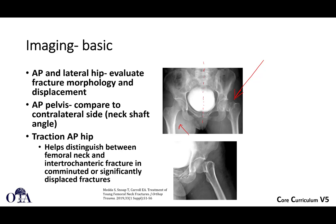Sometimes you have to get a traction AP hip x-ray if you have a confusing fracture pattern. For example, if the patient is severely externally rotated and it's hard to tell whether the fracture is femoral neck or basicervical, rather than guess, a traction AP hip — if the patient can tolerate it — can really show what it's going to look like when you pull traction in the operating room.